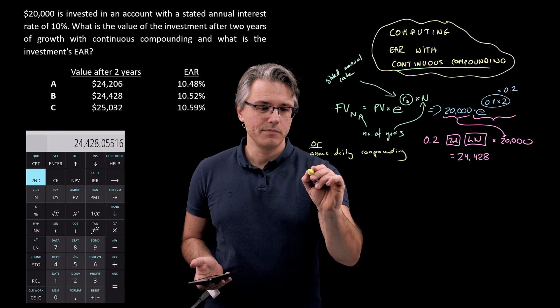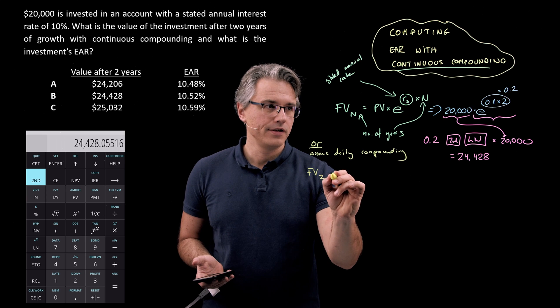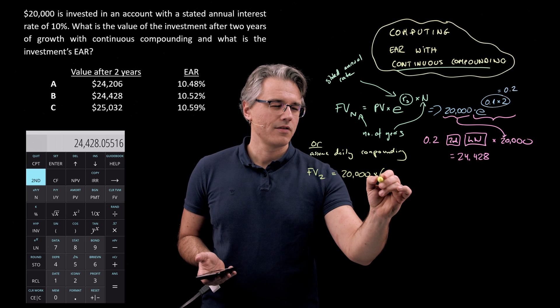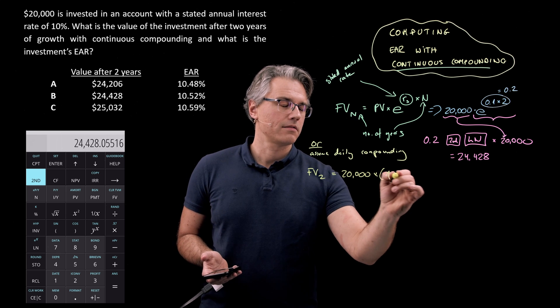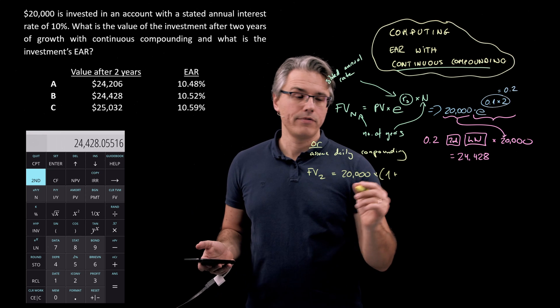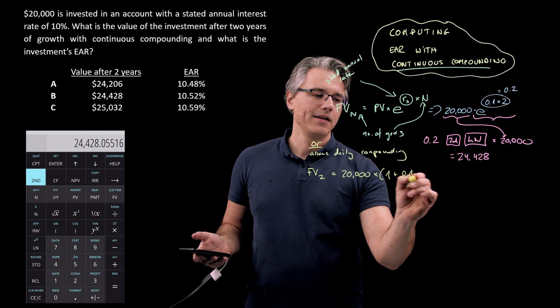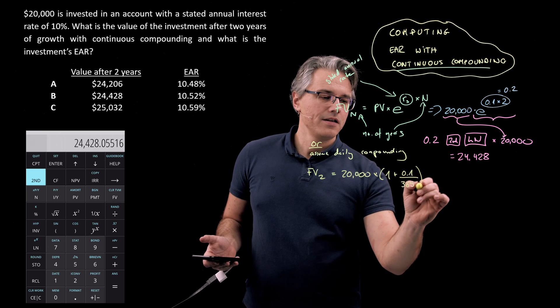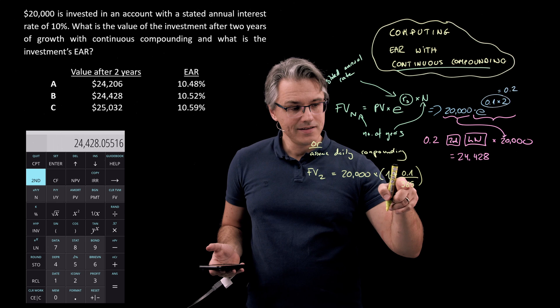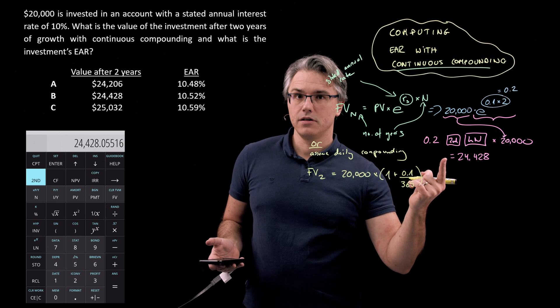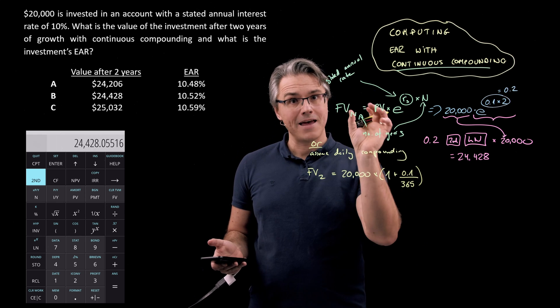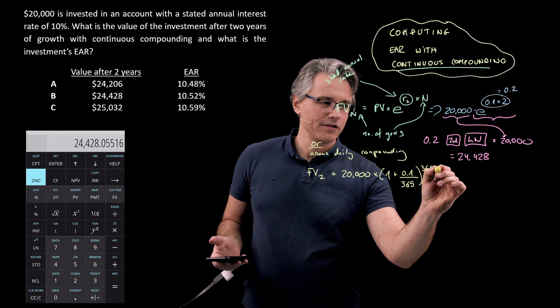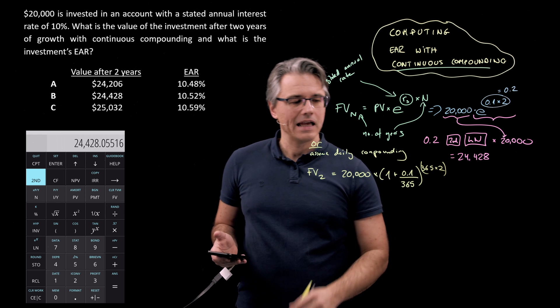The relevant formula here would be FV after two years would be basically twenty thousand, that's the PV, times 1 plus the relevant stated annual rate 0.1. If it was 365 times per year, divided by 365, multiplied by 2, the number of years because we had M times N in the previous video. So 365 times 2 effectively in the power.